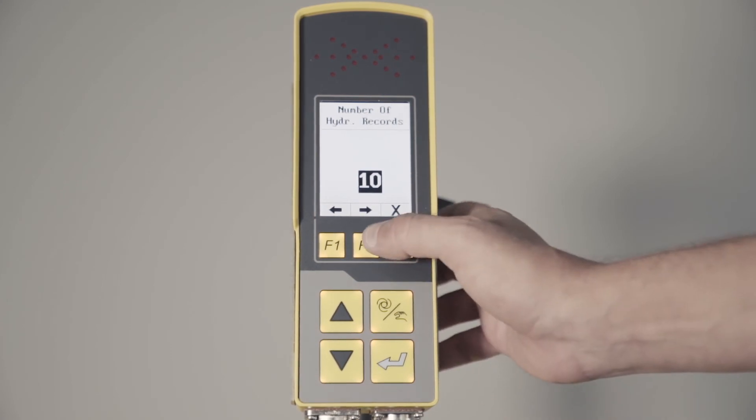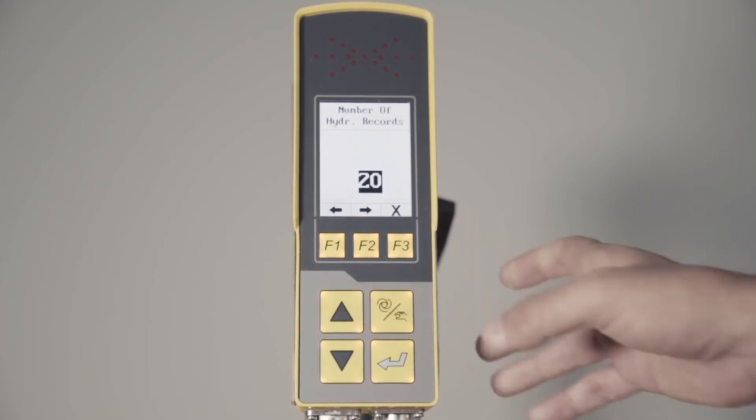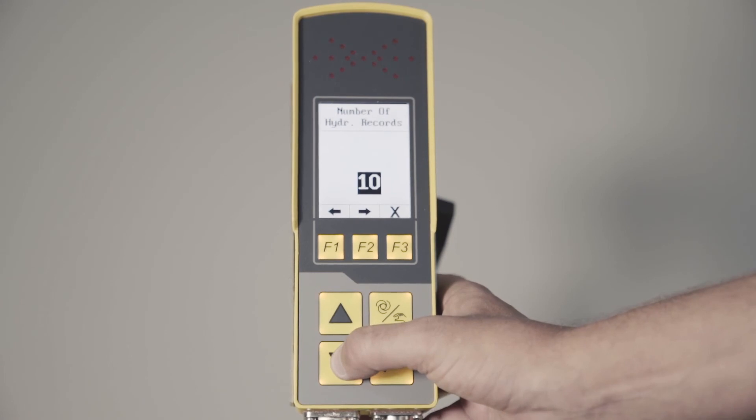Hydraulic records. You can outfit this for up to 20 different machines, so we could put 20 different records in here for 20 different machines. Typically, if you're only using this on one machine, I will bring this number down to one.